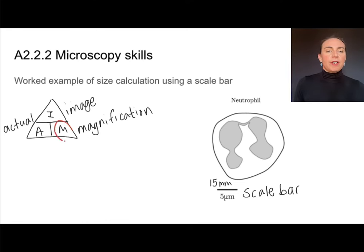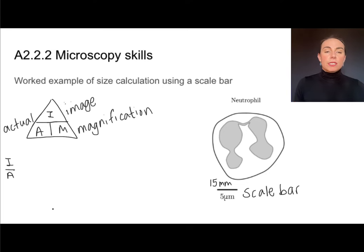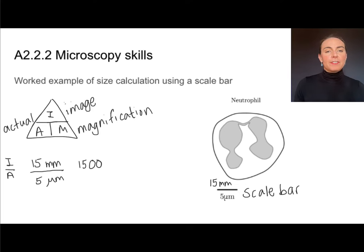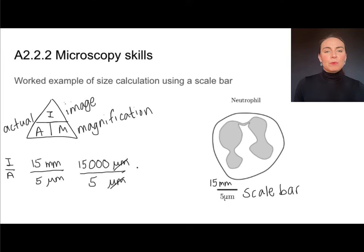Scale bars can be used to find magnification. To find magnification, I take the size of the image and divide it by the actual size. The size of the image here is 15 millimeters, and the actual size is 5 micrometers — that's how big it is in real life. I can't divide these yet because the units are not the same, but I can convert: there are 1000 micrometers in every millimeter, so 15 millimeters equals 15,000 micrometers. Now I can divide, the units cancel out, and I get a magnification of 3000 times.